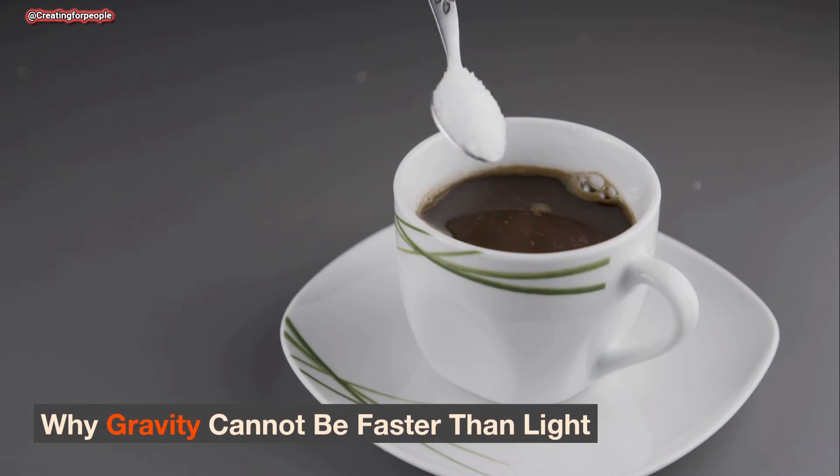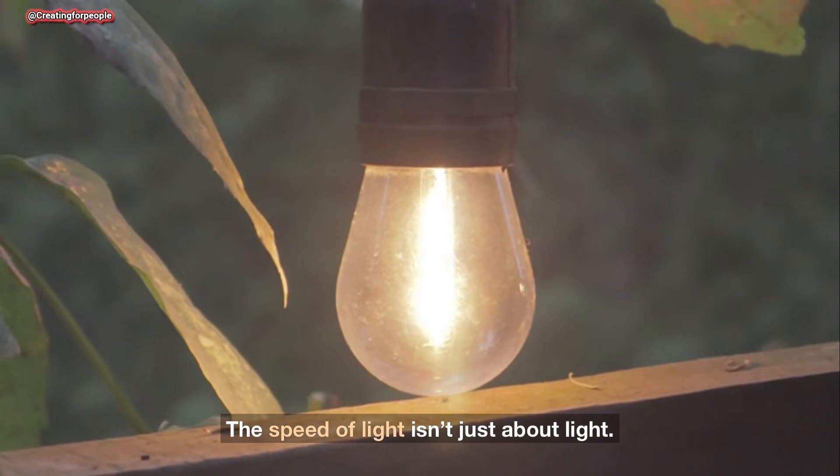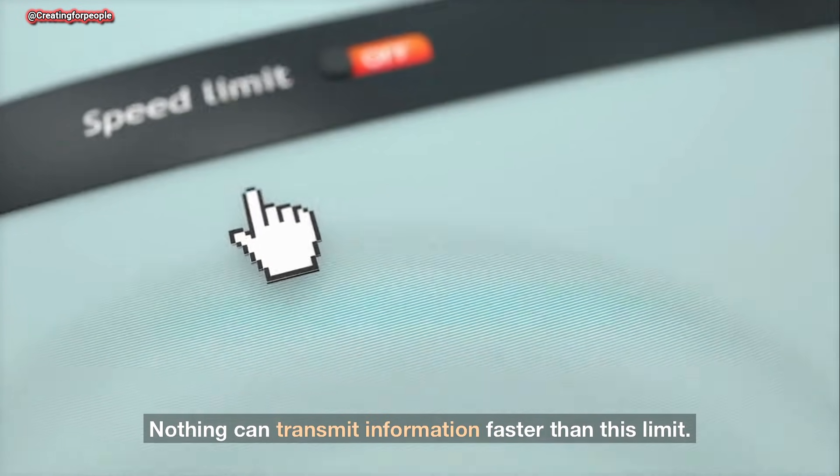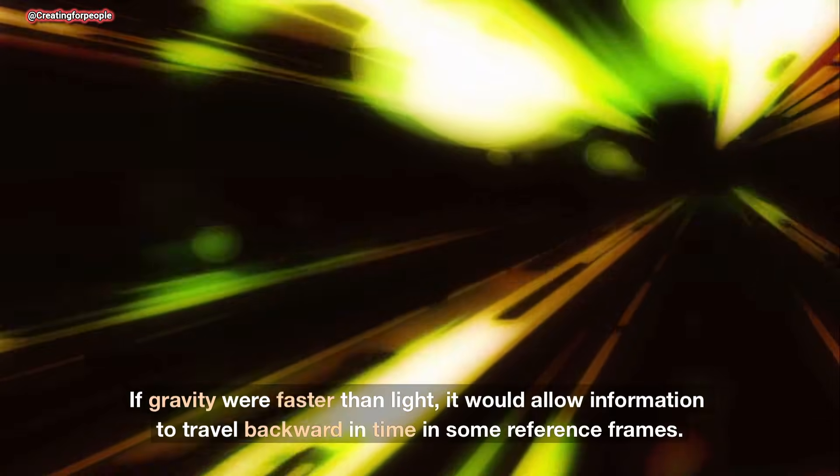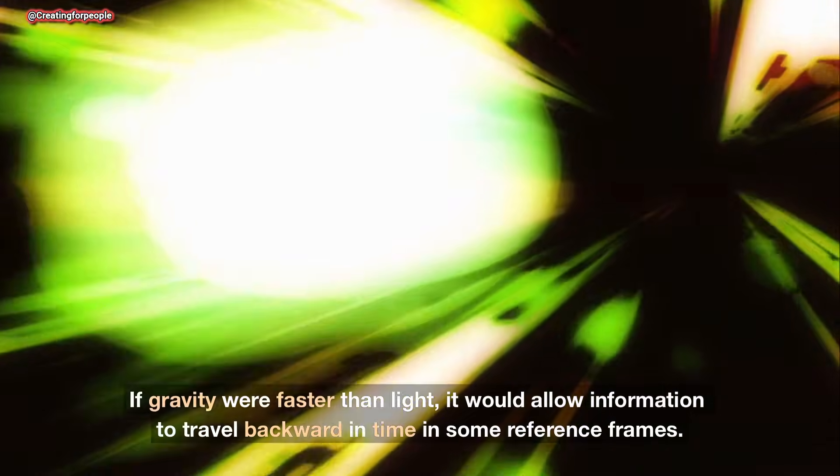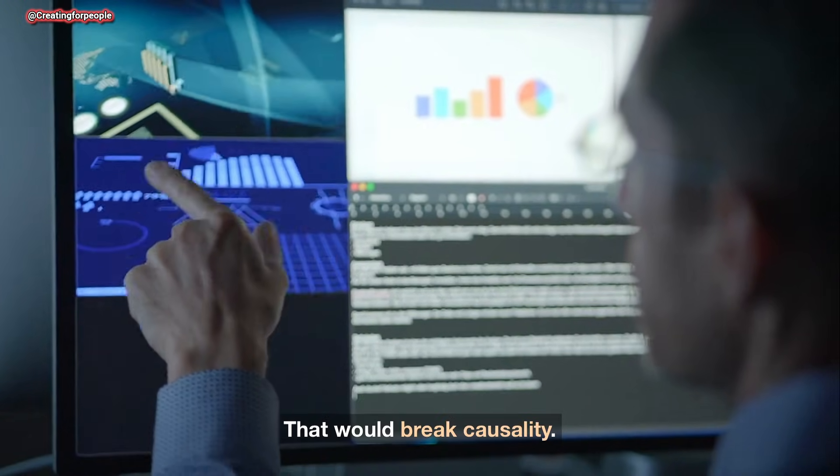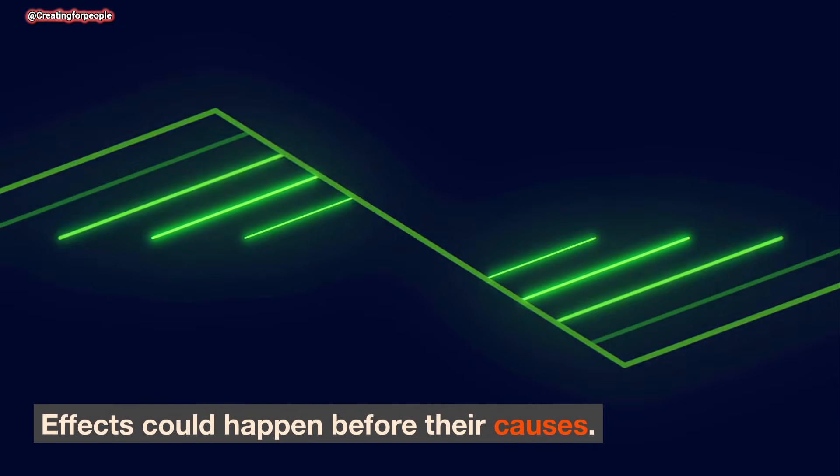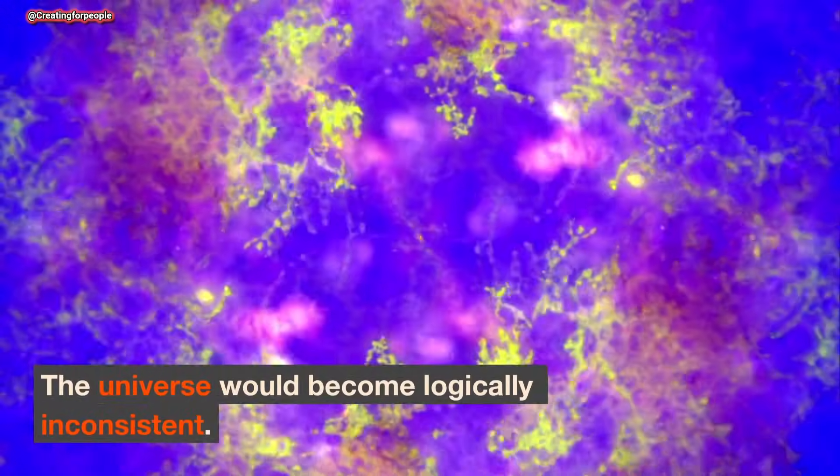Why gravity cannot be faster than light? The speed of light isn't just about light. It's the maximum speed of cause and effect. Nothing can transmit information faster than this limit. If gravity were faster than light, it would allow information to travel backward in time in some reference frames. That would break causality. Effects could happen before their causes. The universe would become logically inconsistent.